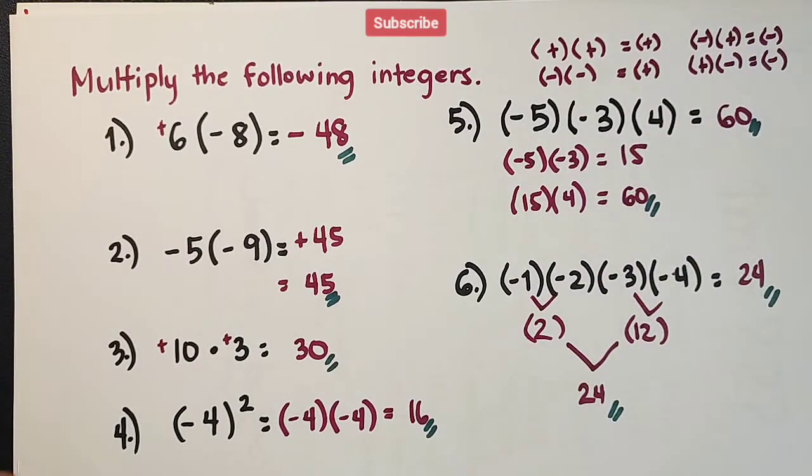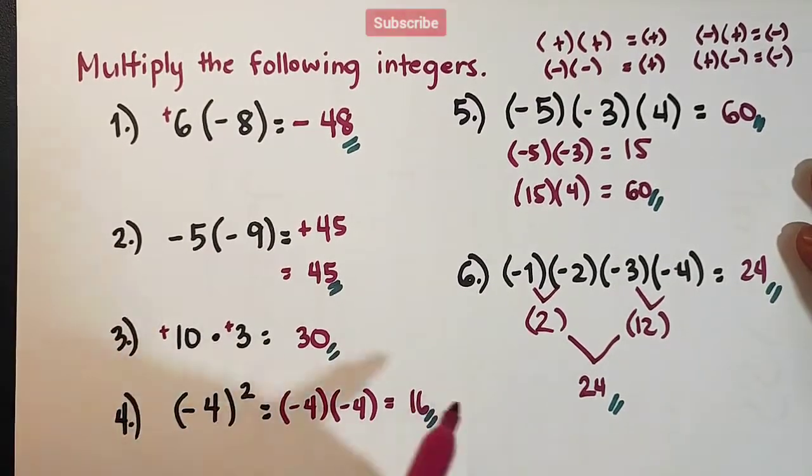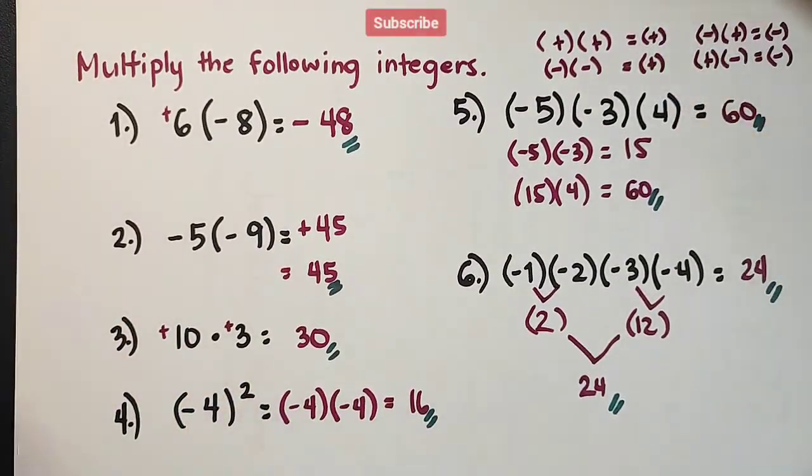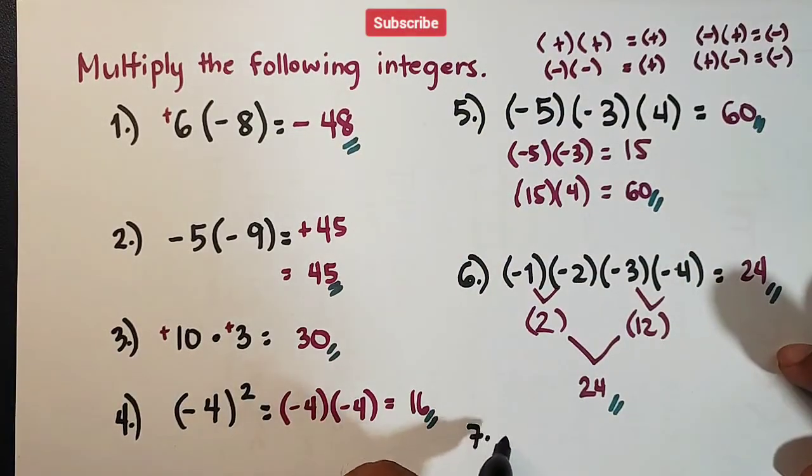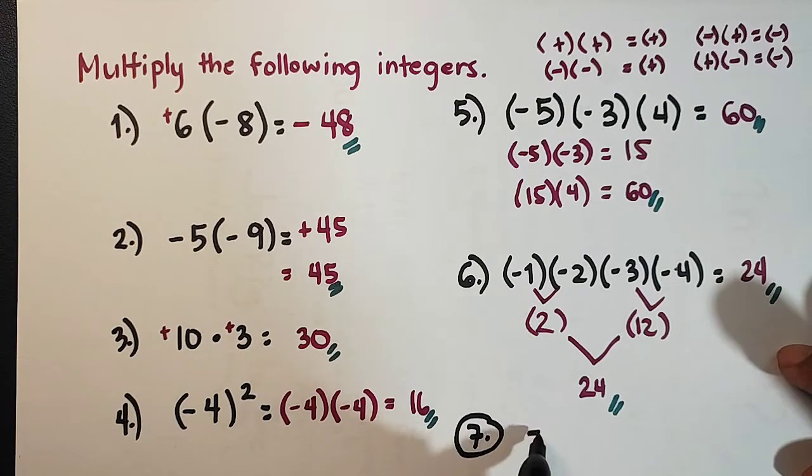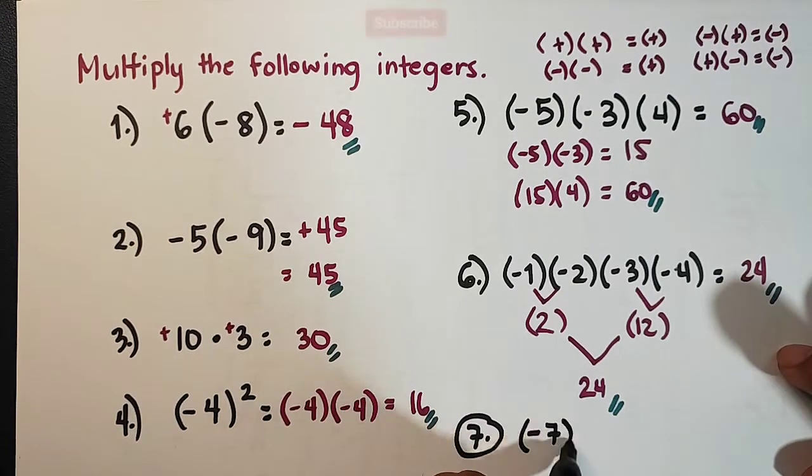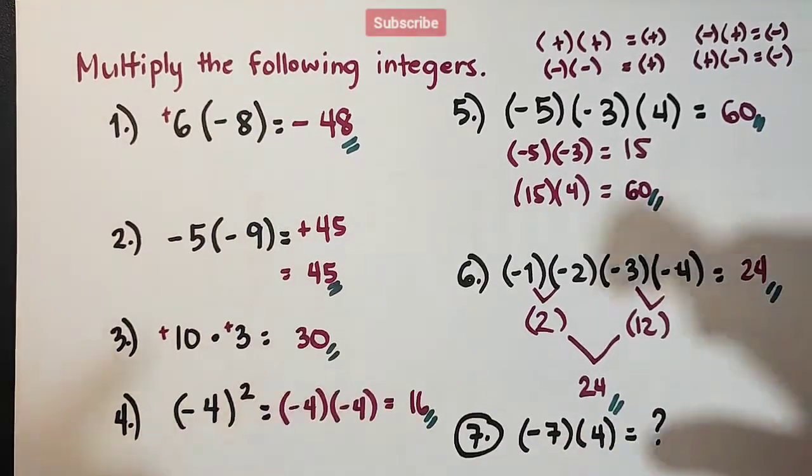So, for your activity, this is number seven. So, let me adjust the paper. For number seven, the given is this. Try to multiply negative 7 times 4. What do you think is the answer for this?